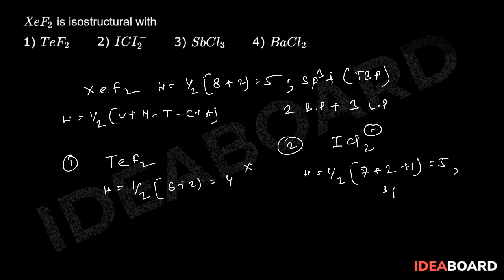In this case, this will be sp³d, and we can see since 2 atoms are attached to iodine, there will be 2 bond pairs plus 3 lone pairs. So this should be isostructural with the first one.